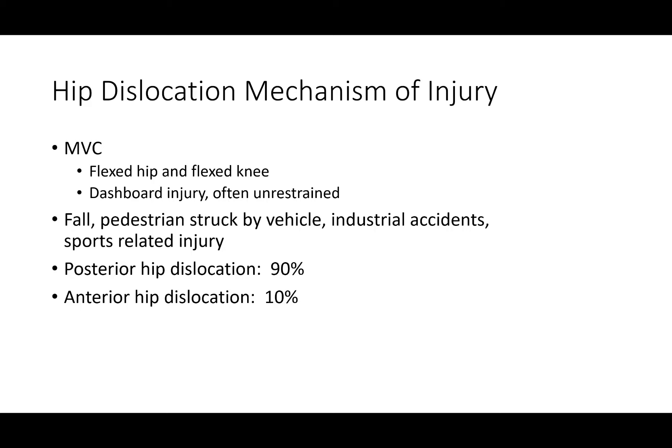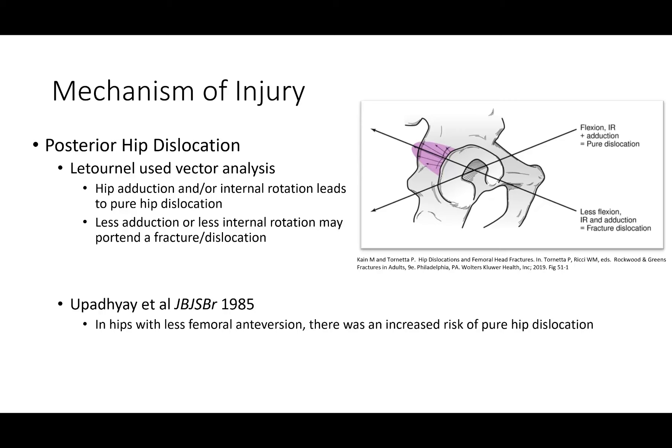Mechanisms of injury include motor vehicle crash, fall, pedestrians struck by vehicle, industrial accidents, and occasionally sports-related injury. These tend to be higher energy injuries, and most of the time the dislocation will be posterior, though anterior dislocations occur as well. In posterior hip dislocations, hip adduction and internal rotation can lead to pure hip dislocation. With less adduction or internal rotation, you're more likely to get a fracture-dislocation. In hips with less femoral anteversion, there could be an increased risk of pure hip dislocation.